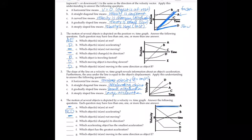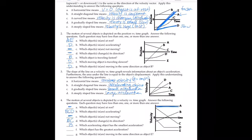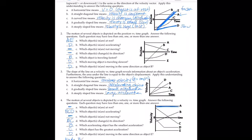Which objects changed direction? B and C — they cross over the middle line on the velocity axis. B goes from negative velocity to positive velocity; C goes from positive velocity to negative velocity. Which accelerating object has the smallest acceleration? B — it has the smaller slope. Which has the greatest acceleration? C — it has the largest slope. Which objects are moving in the same direction as object E? That is D, and partially B and C.